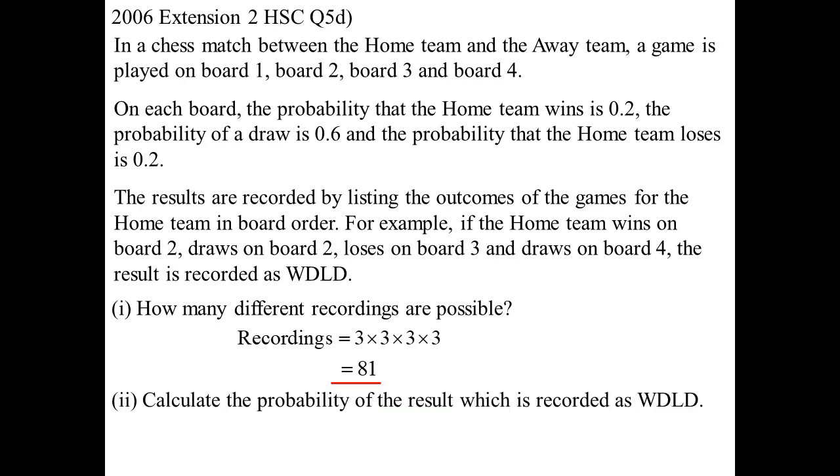Calculate the probability of the result, which ends up win, draw, loss, draw. There's a 0.2 chance of a win on board one. There was a 0.6 chance of a draw, then a 0.2 chance of a loss, and finally a 0.6 chance of a draw. That gives us an answer of 0.0144.